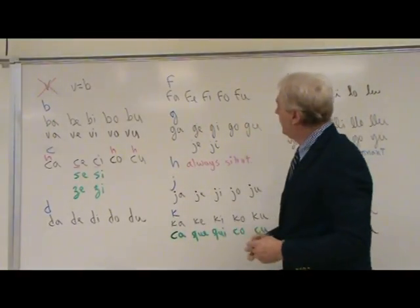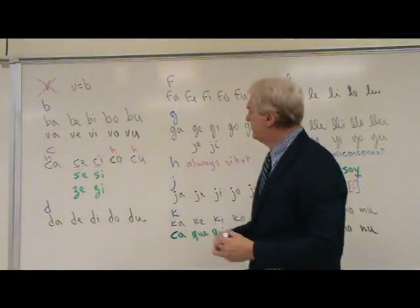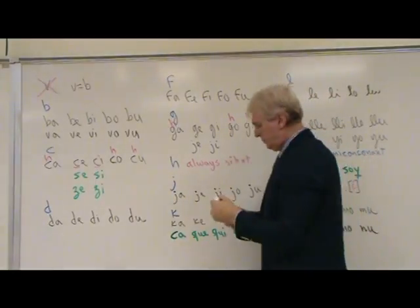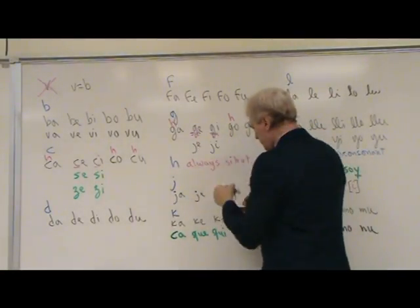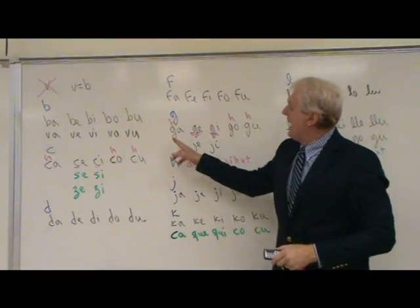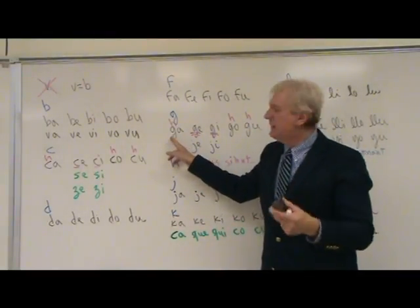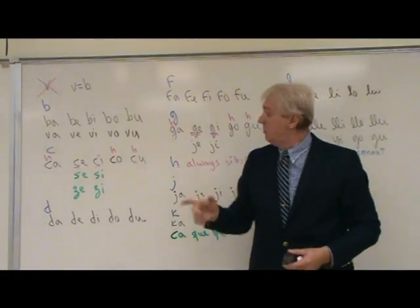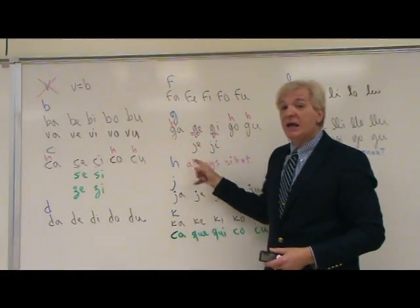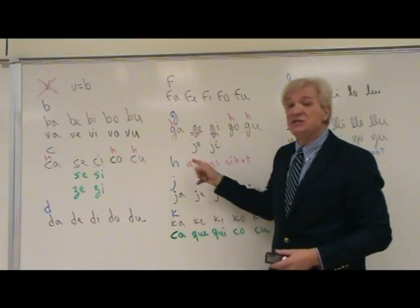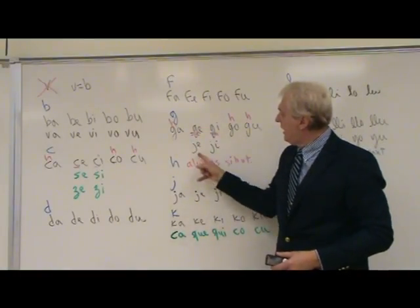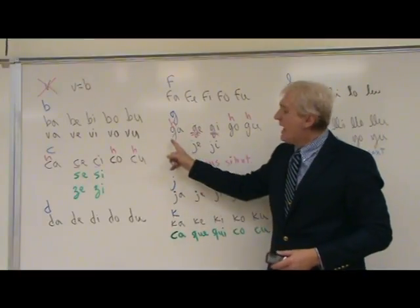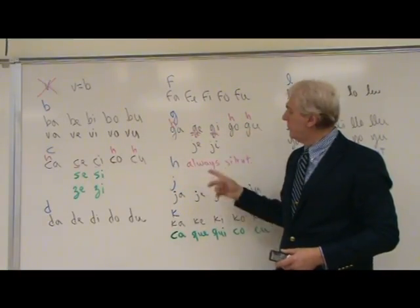The G has a similar situation with hard and soft sounds. Hard G: Ga, Go, Gu. Soft G: Ge, Gi — pronounced 'He, Hi'. Notice that Ge and Je give you the same sound 'He', and Gi and Ji give you the same sound 'Hi'. So: Ga, Ge/He, Gi/Hi, Go, Gu.